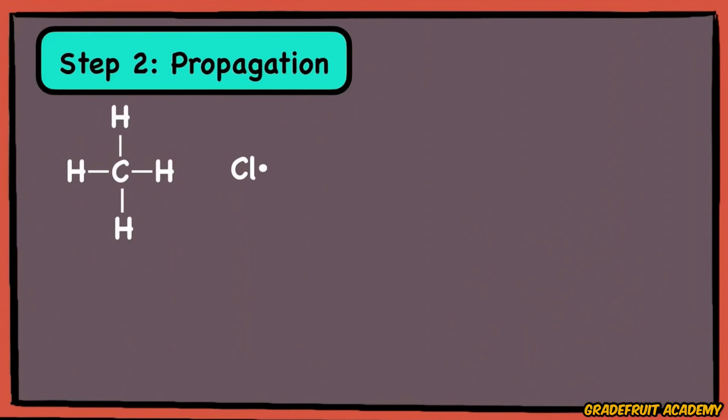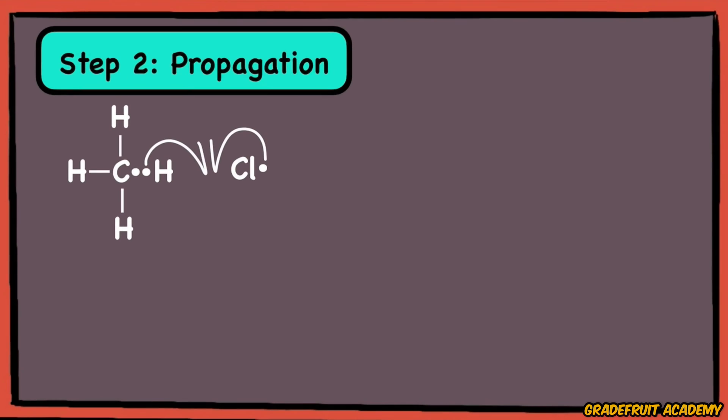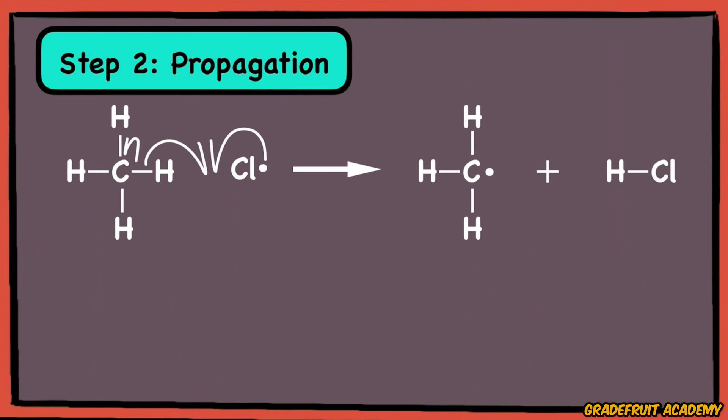Since the CH covalent bond consists of two shared electrons, what happens is that the electron from the hydrogen will join with the unpaired electron of the chlorine radical to form a stable covalent HCl bond, while the remaining unpaired electron of the CH bond will return to the central carbon atom, forming yet another highly reactive radical.